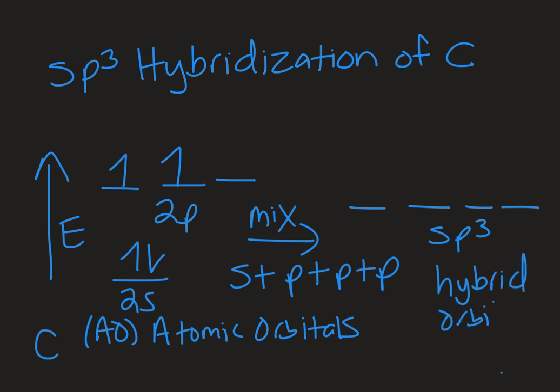Each orbital is one-quarter s character and three-quarters p character. And those electrons are going to redistribute into these hybrid orbitals. And then you can see that I now have four singly-occupied orbitals, and so that means that I could make four sigma bonds with these hybrid orbitals. So this sp3 hybridization allows for a central atom that can accommodate four sigma bonds.